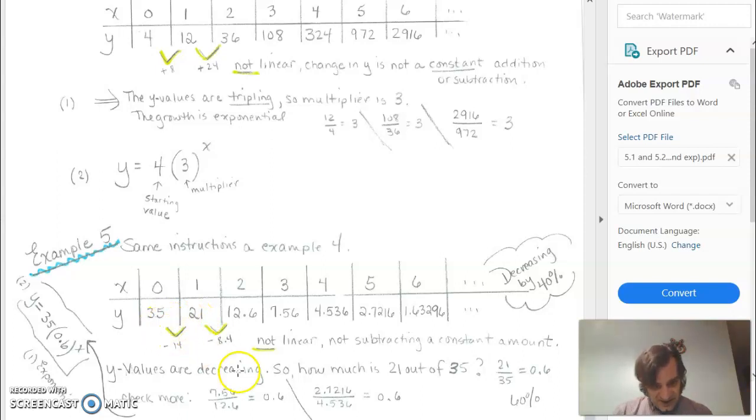21 divided by 35 is 0.6. 12.6 divided by 21 is also 0.6. And we've tried a couple of other ones. So what we're doing here is we're really keeping 60% of the original value, but the multiplier is 0.6. So the equation is over here: 35 is the starting amount times 0.6 to the x, 0.6 being the ratio or the multiplier. Thank you.